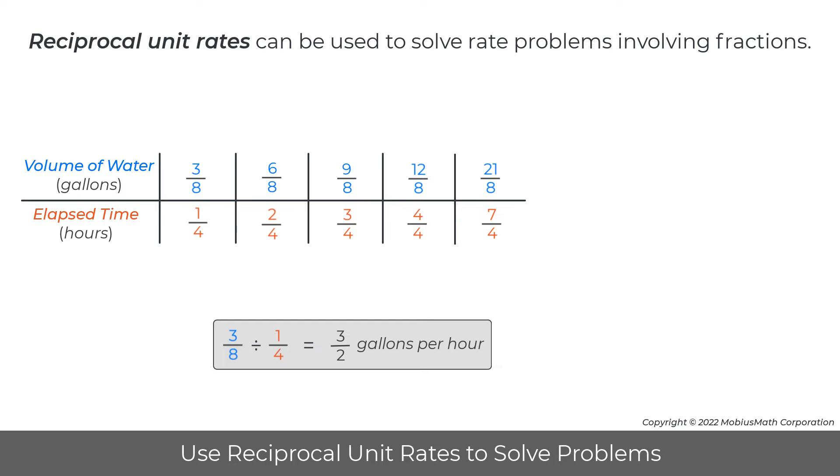Every value for time in the bottom row of the ratio table can be multiplied by three-halves to get each value for the volume in the top row.